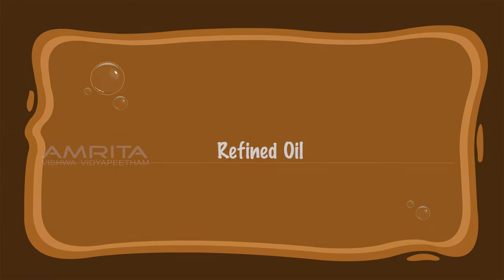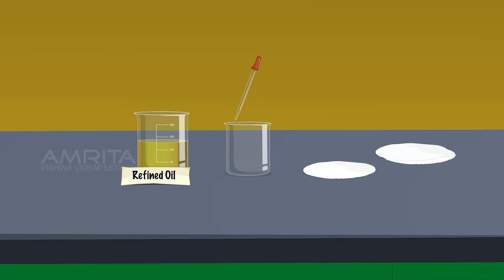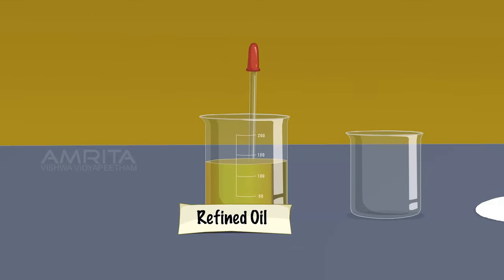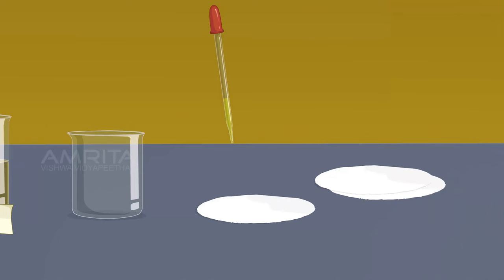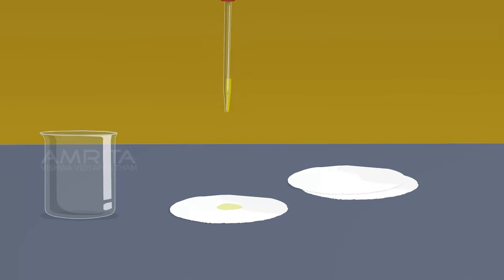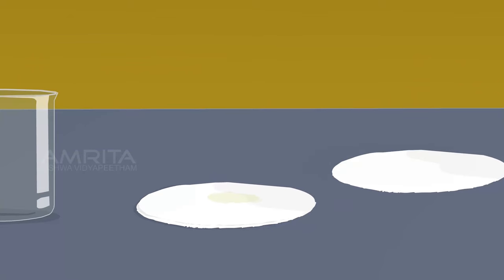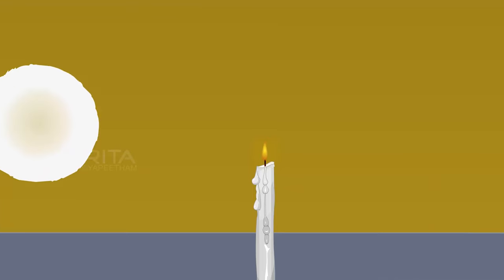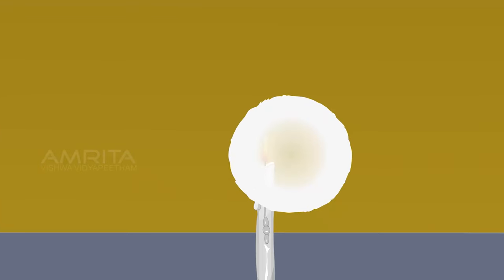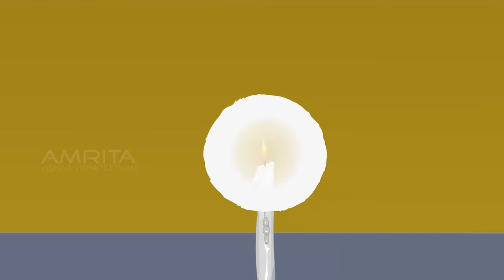Refined Oil. Take a small quantity of refined oil using a dropper and drop a few drops on the filter paper. Then press the substance on the filter paper using another filter paper. A translucent spot appears on the filter paper. The reason is that when fat or oil is placed on a sheet of paper, it diffracts light. The diffracted light can pass from one side of the paper to the other, giving a translucent spot.